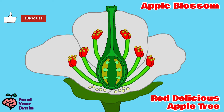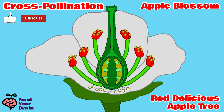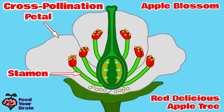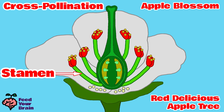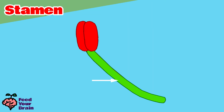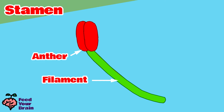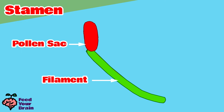Here is an example of an apple blossom, which relies on cross-pollination with a different species of apple tree nearby. This process is really amazing. You have the petals, which make the outer form of the flower and attract insects. At the base of the petals are sweet nectar secretions. These stems are called the stamen. Let's look closer: the stem is called the filament, and the top round part is called the anther. Just one of those round parts is called the pollen sack.